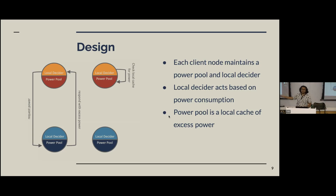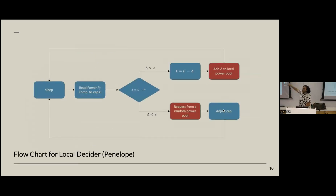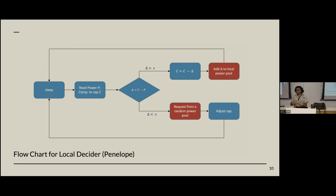If a node has excess power, the choice we make is to allow nodes in need of power to search, rather than having nodes with excess power push it out. So if a node has excess power, it won't do anything — it will just continue to operate. If every node in the system has excess power, there is no need to communicate, and so there are no messages. Communication is driven by nodes that need power. This is a modified flowchart for Penelope. The two things that are changing are: if we have excess power, we add it to a local power pool rather than communicating externally; and if we need power, we check locally and then probe a random node to see if it has any excess power for us.